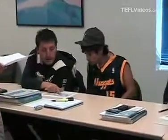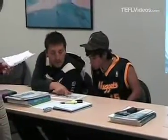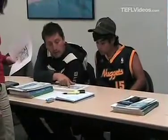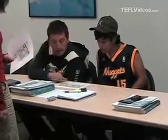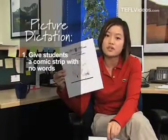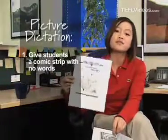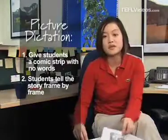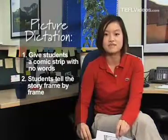Above the sign there's a number — two, five, one — and the other one just two, five. Then I'm going to give them the comic strip without any words, and students will have to tell the story frame by frame. This is called a picture dictation.